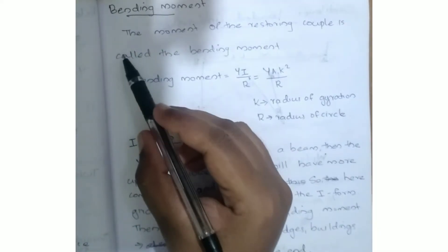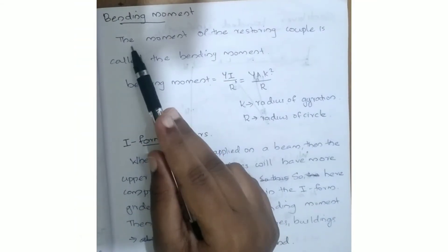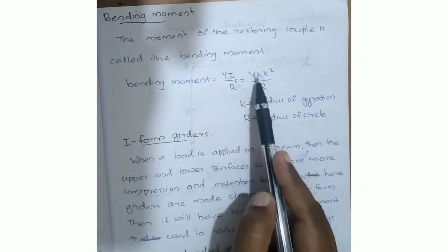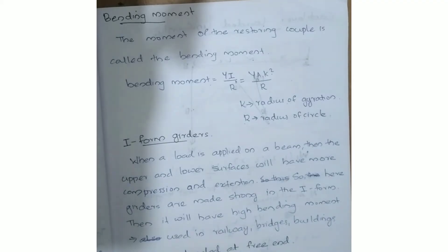The moment of the restoring couple is called the bending moment. The bending moment is given by the equation Y times I by R, or equivalently Y times A times k squared by R, where k is the radius of gyration and R is the radius of curvature of the circle.